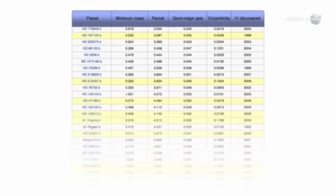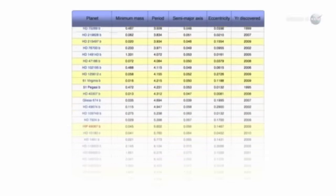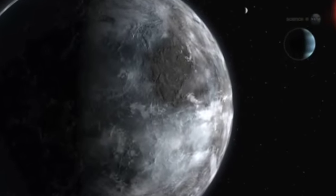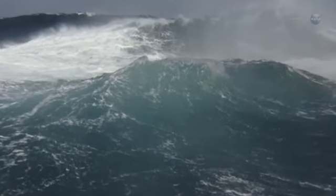As the numbers mount, it seems to be just a matter of time before Kepler finds what astronomers are really looking for: an Earth-like planet orbiting its star in the Goldilocks zone—that is, at just the right distance for liquid water and life.